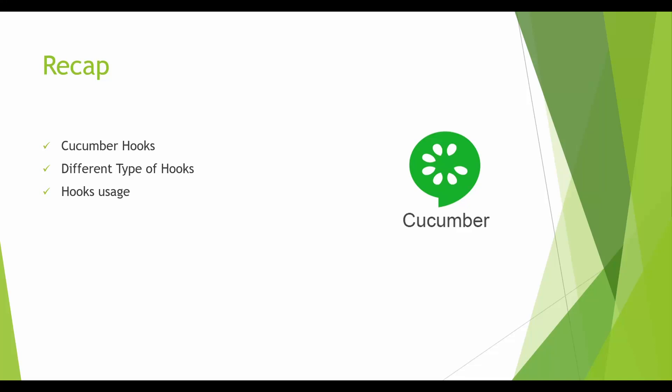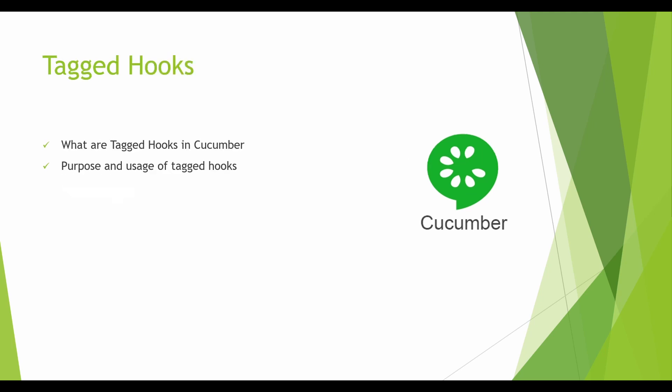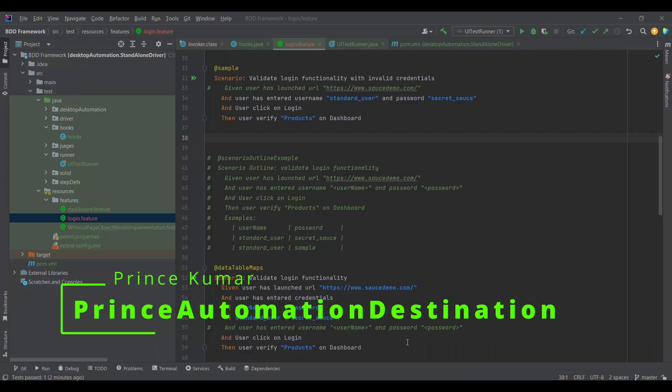Hello everyone, welcome back to my channel Prince Automation Destination. In our previous lecture we discussed about Cucumber hooks — different types such as before scenario, after scenario, before step, and after step. We discussed their uses and practical applications. Today we are going to discuss about tag hooks: what is the need of tag hooks, what they are, and how to use them.